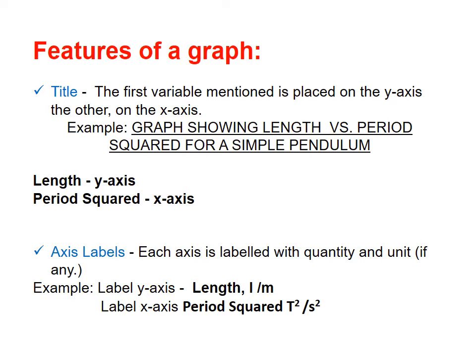Then you would have your axis labels. Now, each axis is labeled with quantity or with the quantity as well as the unit if there is any. So for example, the label that you would have on your y-axis would be length and you'll have the symbol for length which is L and the unit, in this case, the SI unit is meters.